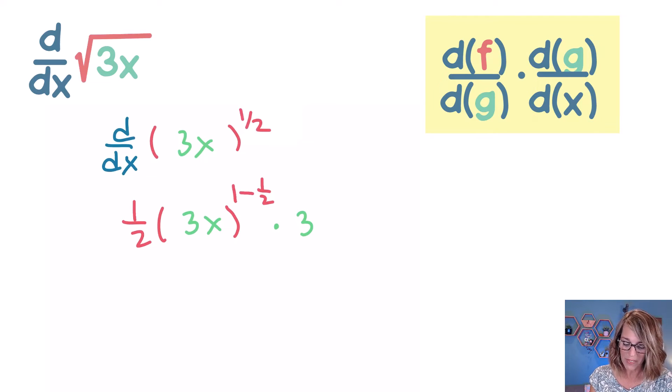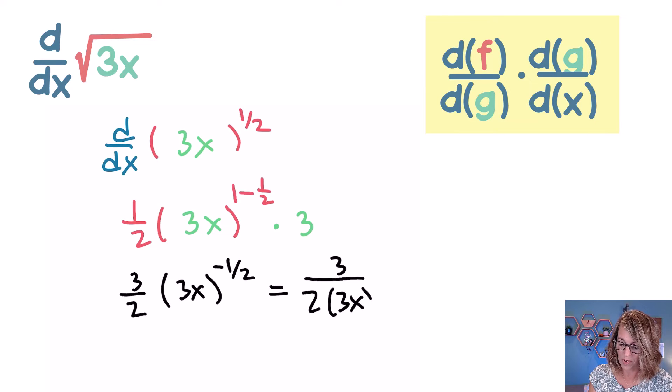Now I've got a little bit of cleaning up here that I can do. I can put the 3 and the fraction one-half together and I also know that I've got this 3x to the negative one-half power. So that would be 3 over 2, 3x to the positive one-half power moving it into a denominator which I can write as 3 over 2 radical 3x.